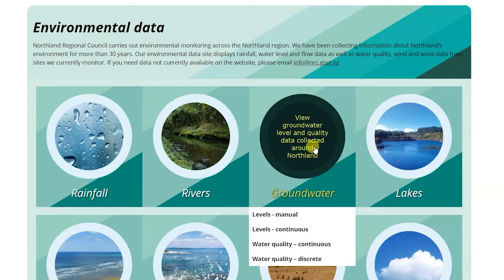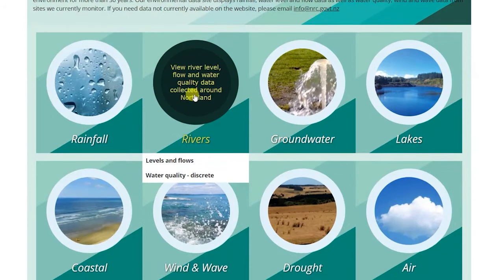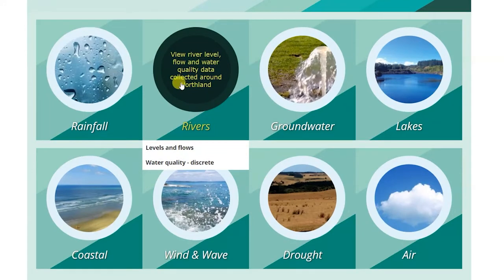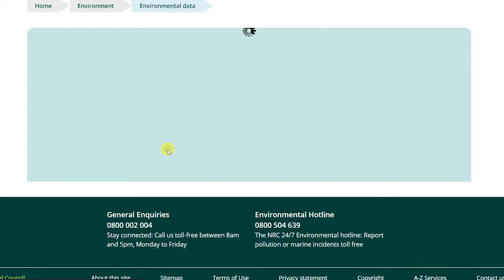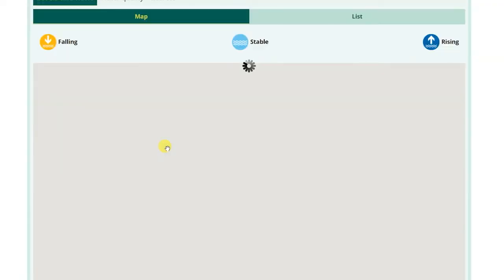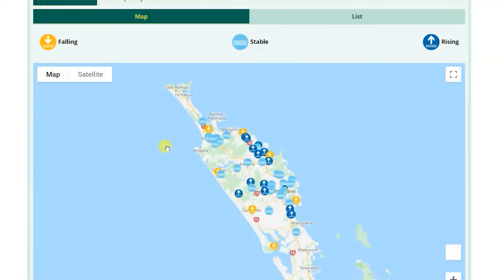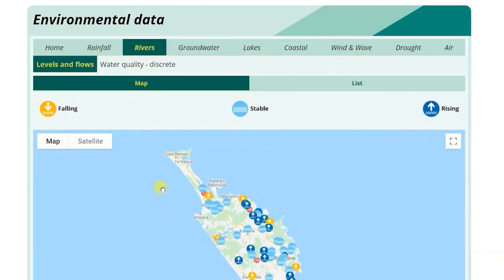When you first enter the site, select which module you want to look at. Some modules have a drop-down menu where you can choose which data collection you want to view. You can change the module or data collection type using the navigation bars.